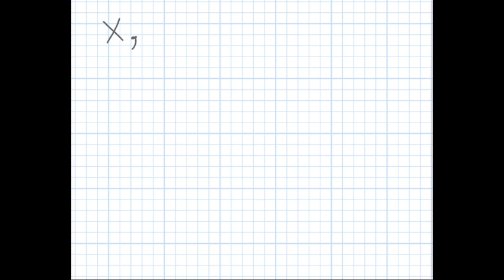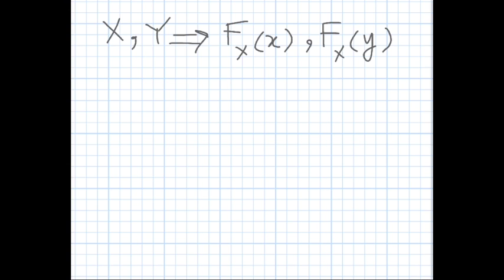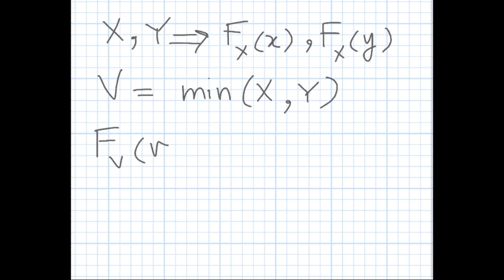Let's say we have two random variables X and Y, and their corresponding CDFs are F_X(x) and F_X(y). We are interested in a variable V equal to the minimum of X and Y, and we want to find the CDF of V in terms of the CDFs of X and Y, as well as the joint CDF of X and Y.